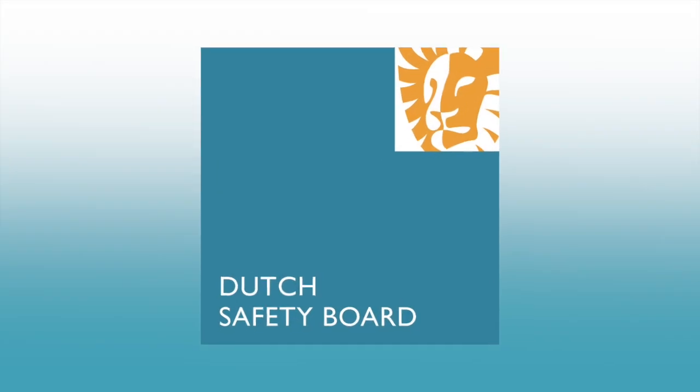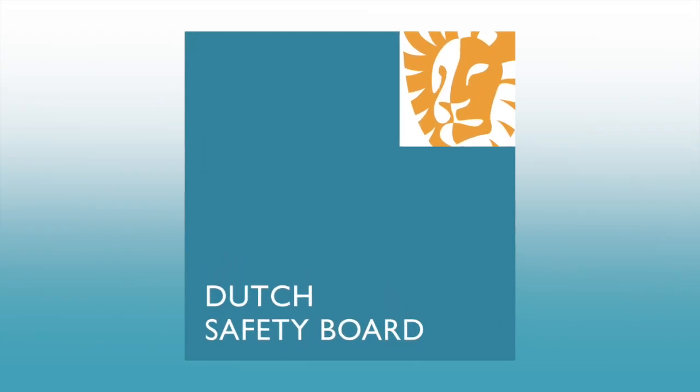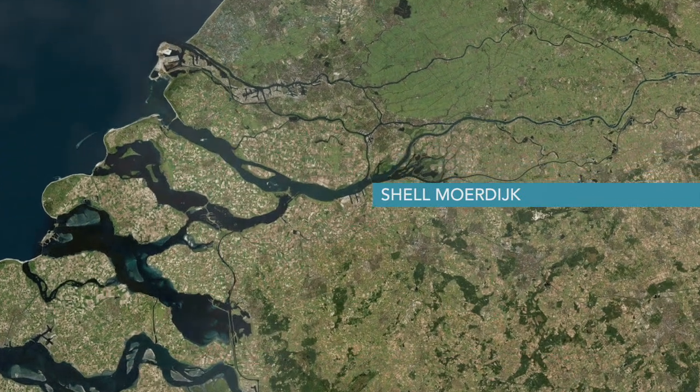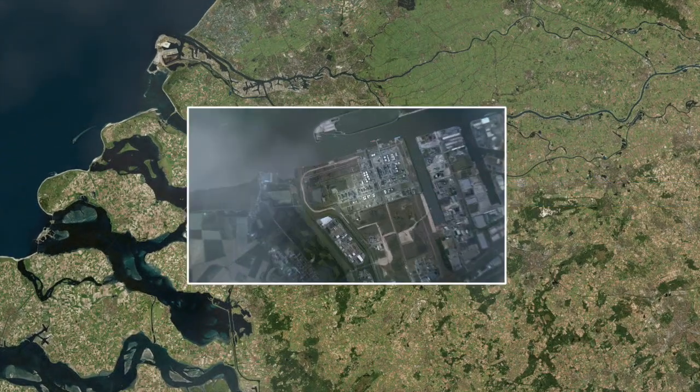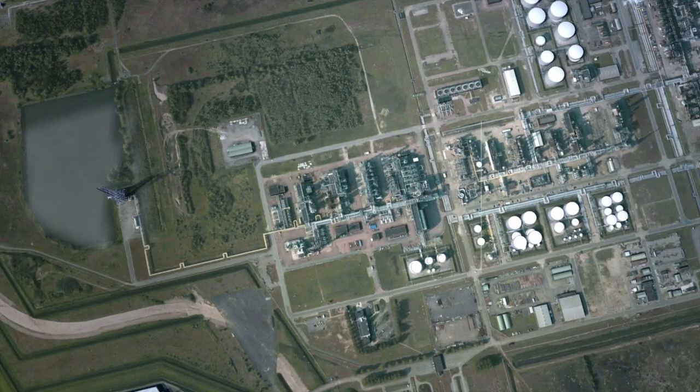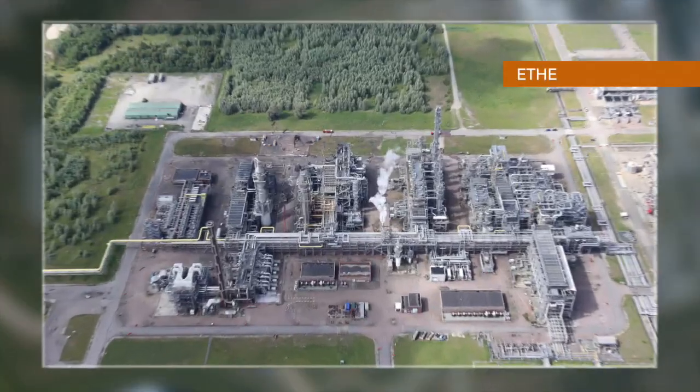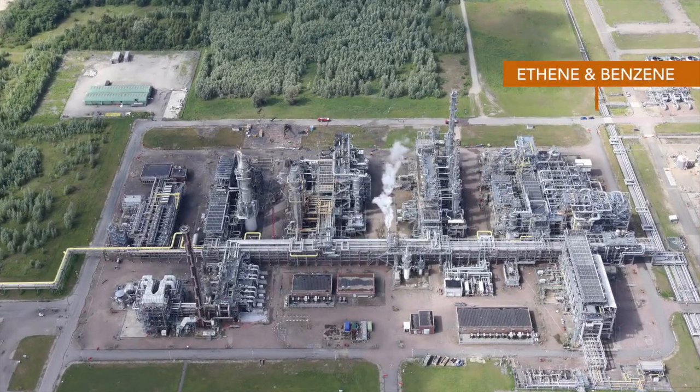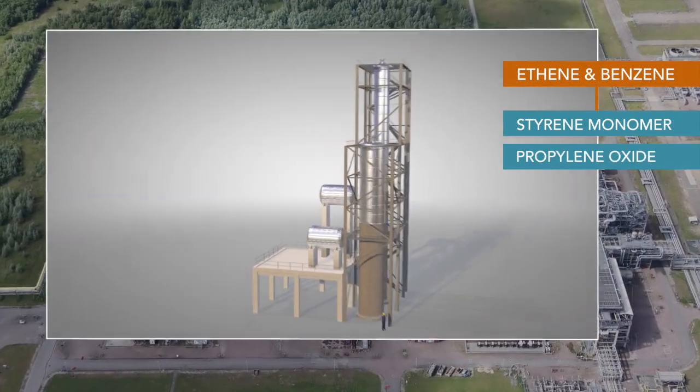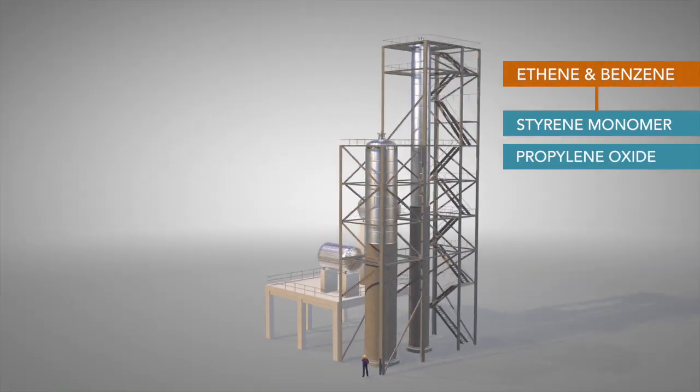The Dutch Safety Board has investigated this accident. At the plant in Moordyke, Shell produces chemicals from oil and gas. In this installation, ethane and benzene are used to produce styrene monomer and propylene oxide. These products are used in styrofoam, food, cosmetics and pharmaceuticals.